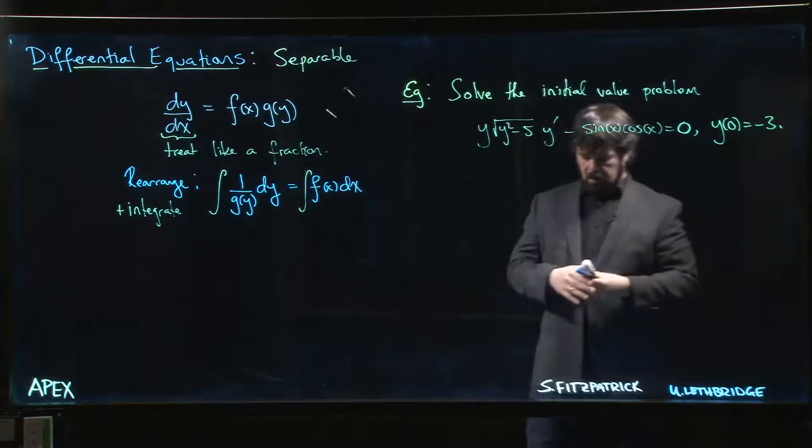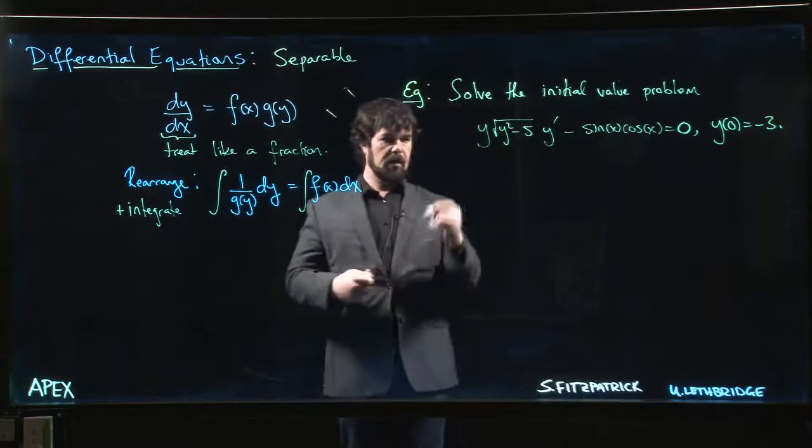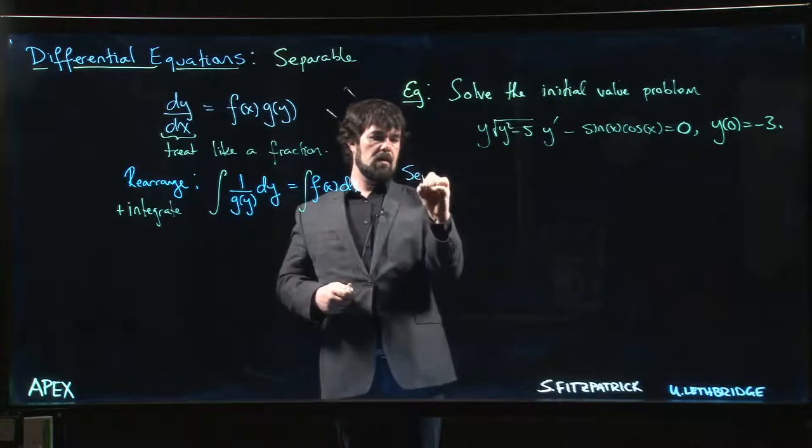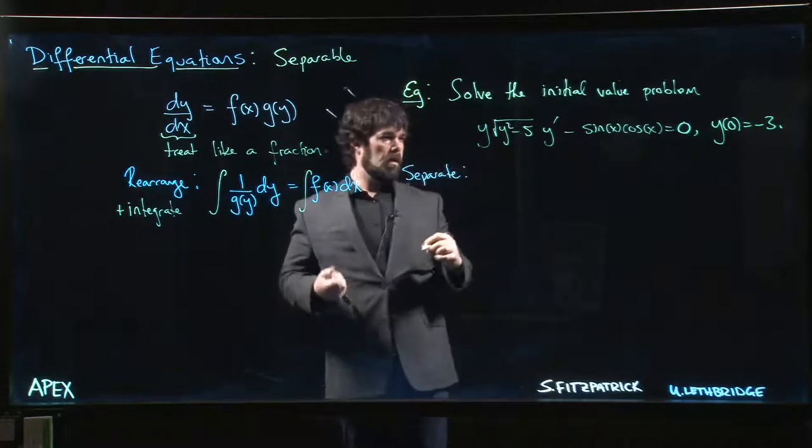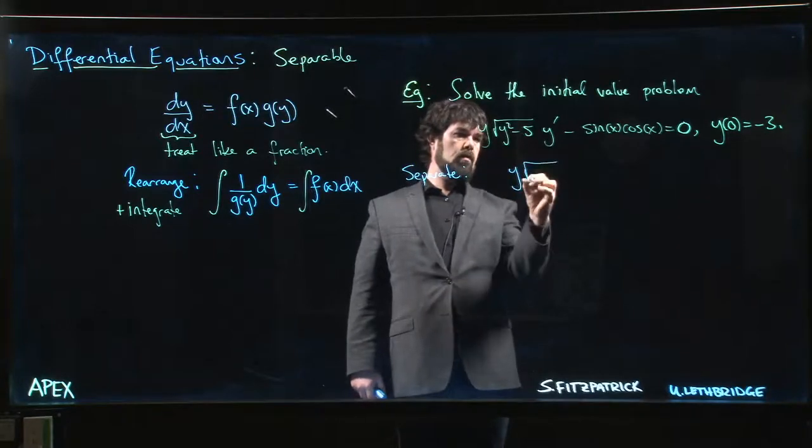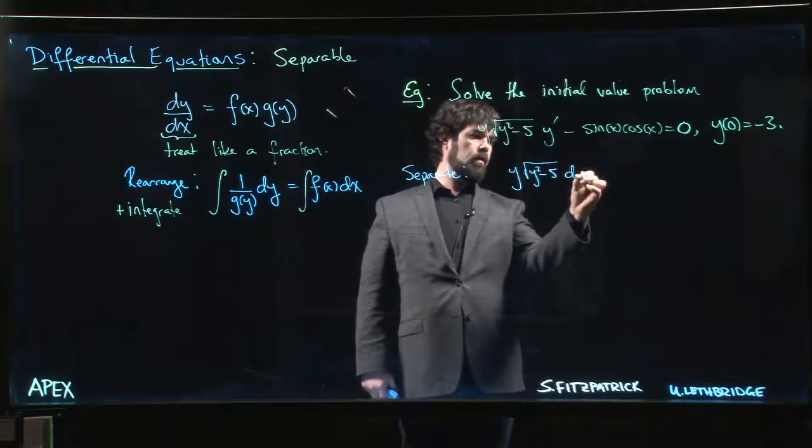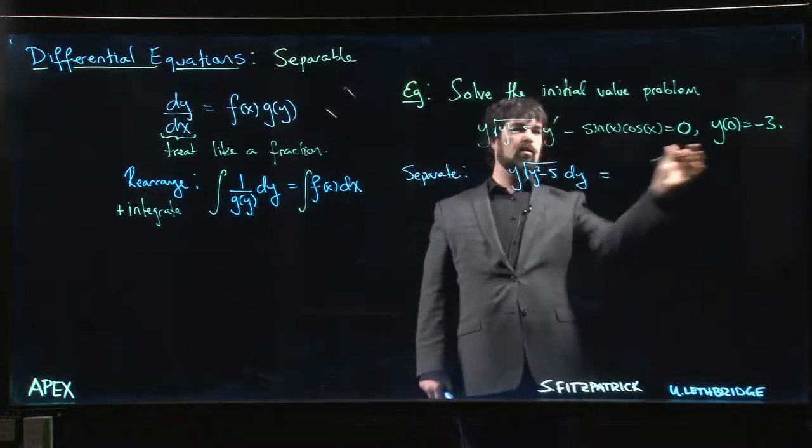So we see that with a little bit of manipulation we can do that. The separation step here is going to be: we have y root y squared minus 5 dy, move this to the other side, we multiply by dx, sine x cos x dx.